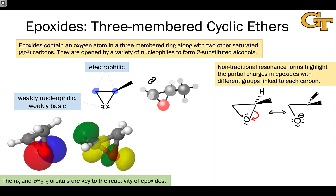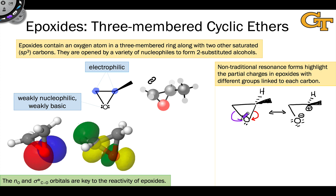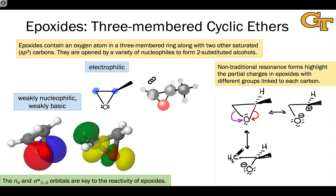This is certainly a nontraditional resonance form because all we've done is broken a sigma bond. Nonetheless, it gives us great insight into the reactivity of epoxides — nucleophilic and basic at oxygen, and electrophilic at the carbons. We can do the same thing with the other C–O bond, leading to a different resonance form in which the epoxide oxygen remains negative, but the positive charge now lives on the other CH2 carbon of the epoxide ring.